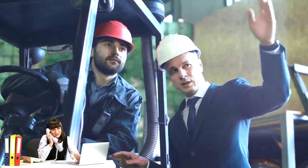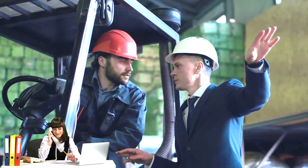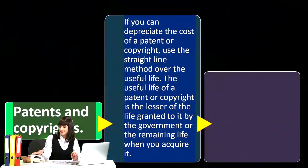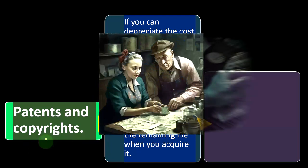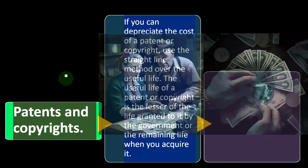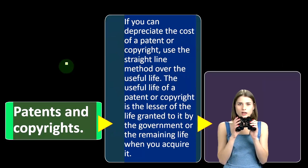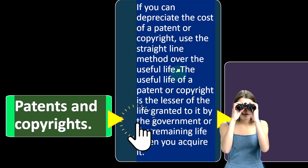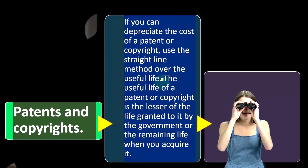We have exceptions with other types of depreciable or amortizable items — intangible items — like patents and copyrights. If you can depreciate the cost of a patent or copyright, use the straight-line method over the useful life. The straight-line method is the standard or baseline method when thinking about any kind of depreciation in concept.